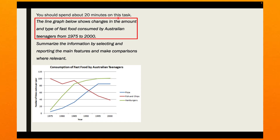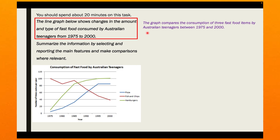Step two: paraphrasing the question. Begin your writing by paraphrasing the question. Paraphrasing basically means you say the same thing but use your own words. Don't copy what's given in the question — use your own words and keep the meaning the same. Here's the question: 'The line graph below shows changes in the amount and type of fast food consumed by Australian teenagers from 1975 to 2000.' This is how I've paraphrased it: 'The graph compares the consumption of three fast food items by Australian teenagers between 1975 and 2000.' This paraphrased sentence alone makes up your first paragraph — your complete introduction.